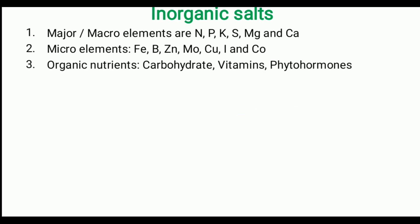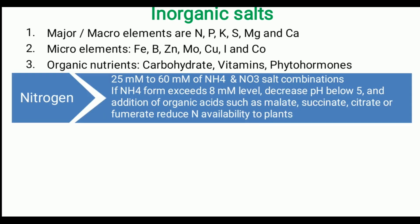Organic supplements such as carbohydrates, vitamins, and phytohormones are also added. Regarding major macro elements, nitrogen is supplemented up to 25 to 60 millimolar concentration in the tissue culture medium, and it has two kinds: ammonical form and nitrate form. NH4 or NO3 based salt combinations are used. If excess NH4 or ammonical form is used, it can decrease the pH below 5 in the nutrient medium, making plants unable to uptake nutrients. So we have to avoid excessive use of ammonical form and usually add equal or major proportion of nitrate-based nitrogen salt.